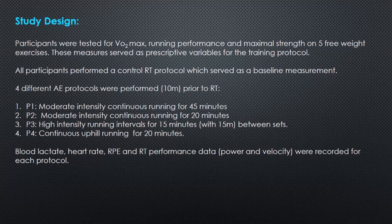All participants performed five different training sessions. The first was a control protocol serving as a baseline measurement, then four different aerobic endurance protocols were performed prior to resistance training, spaced at least 48 hours apart. Protocol one was moderate intensity continuous running for 45 minutes; protocol two was moderate intensity for 20 minutes; protocol three was high intensity intervals of 15 minutes on, 15 off; and protocol four was continuous uphill running for 20 minutes. Blood lactate, heart rate, and rate of perceived exertion were recorded throughout.